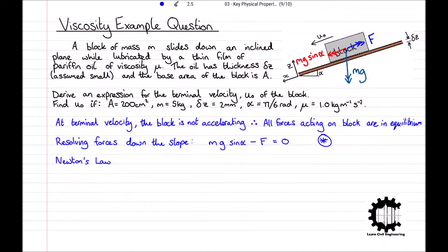As we defined earlier in this video, Newton's law of viscosity gives tau is equal to mu times by du over dz. Knowing that force is equal to stress times area, or F equals tau times A, we can substitute in Newton's law of viscosity to give F equals A times mu times du over dz, which is approximately equal to A times mu times u0 over delta z. Therefore, our first equation becomes mg times sin alpha minus A times mu times u0 over delta z equals zero.